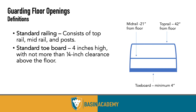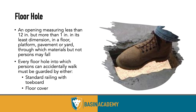You can construct a two-by-four mid rail, top rail, and toeboard system that withstands 200 pounds of outward pressure, but usually it's more efficient to use something designed and manufactured for that purpose. For a small floor hole — like a 12- to 14-inch hole — you'd typically use plate steel to cover it rather than building a 42-inch-high guardrail around it.